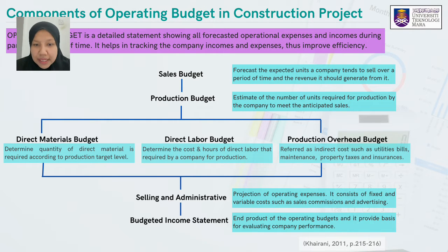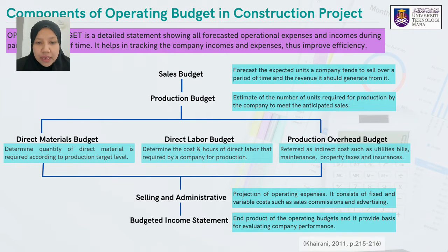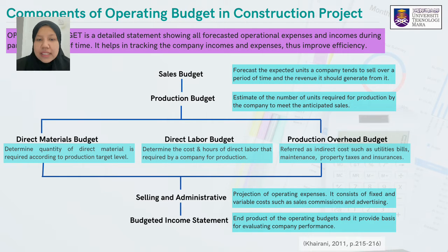The sales budget forecasts the expected units a company tends to sell over a period of time and the revenue it should generate. The production budget estimates the number of units required to meet anticipated sales. The direct materials budget determines the quantity of direct material required according to production target levels. The direct labor budget determines the cost and hours of direct labor required for production. The production overhead budget refers to indirect costs such as utility bills, maintenance, property taxes, and insurance. The selling and administrative budget is a projection of operating expenses.